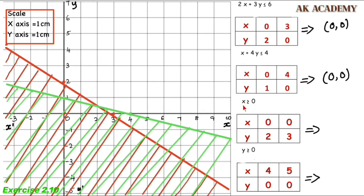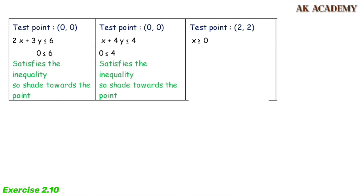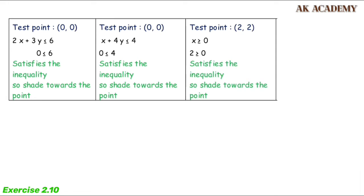The third inequality is x greater than or equal to 0. The line for this is the y-axis, where x equals 0. We use a testing point — the point (2,2) is in the first quadrant. For x greater than or equal to 0, x equals 2, and 2 is greater than or equal to 0, so the inequality is satisfied. We shade the right side of the y-axis.